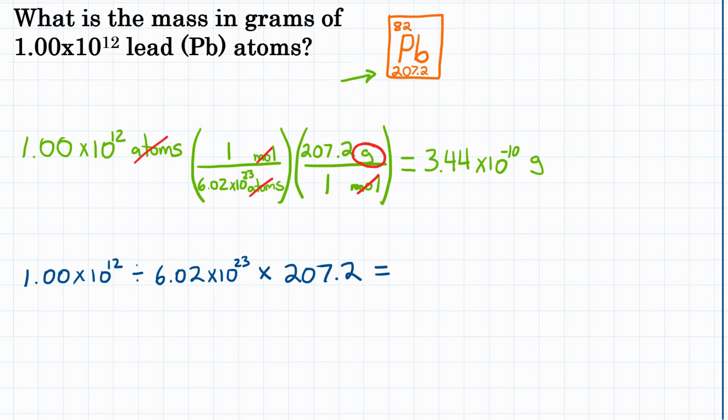What you need to make sure is that your calculator keeps this 6.02 times 10 to the 23rd together, because that's on the bottom of our first fraction, that whole thing. So we need to make sure that we divide by all of that so that we get the right answer.